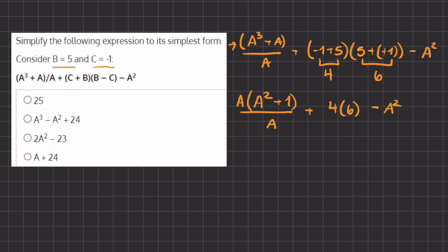So now if we further simplify, we can cancel out these two A's, and we are left with A squared plus 1, plus 24 because 4 times 6 gives us 24, minus A squared.